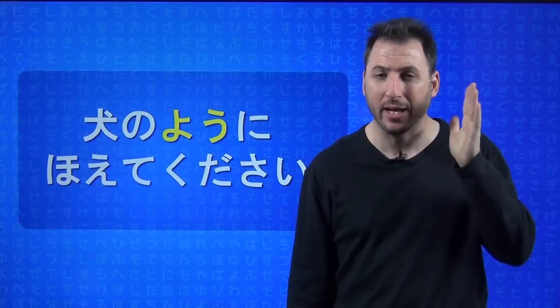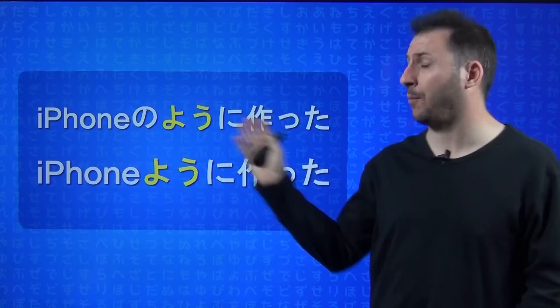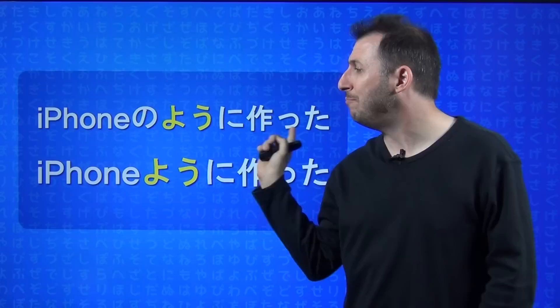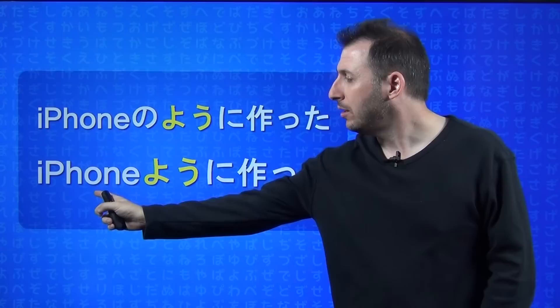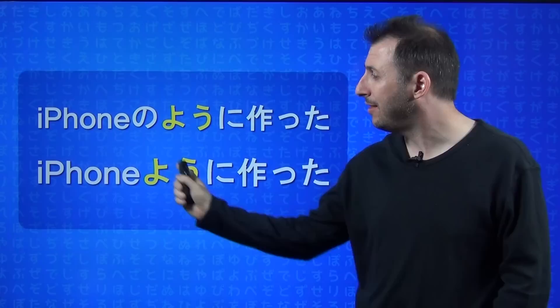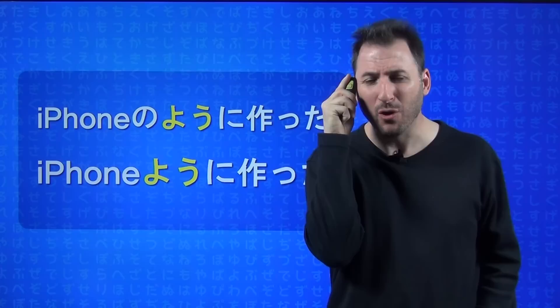Let's look at these two grammars side by side and see why it can be confusing. iPhone no yō ni tsukutta - tsukutta means to make. This means I made it like an iPhone, in the same way as an iPhone. Or iPhone yō ni tsukutta - this means I made it for iPhone. The only difference is the no. That can be confusing.